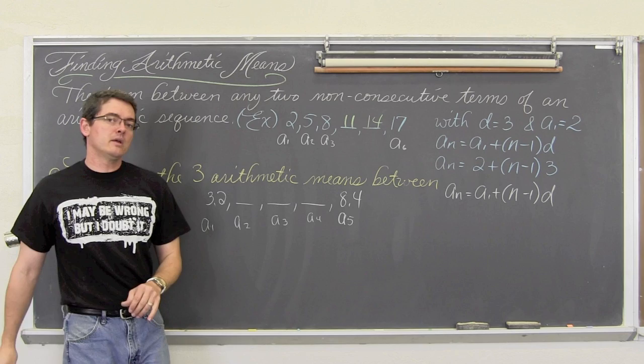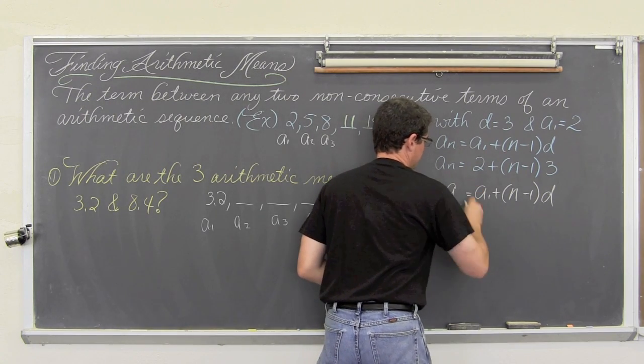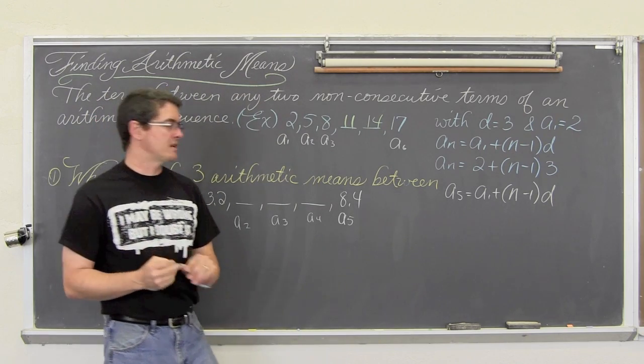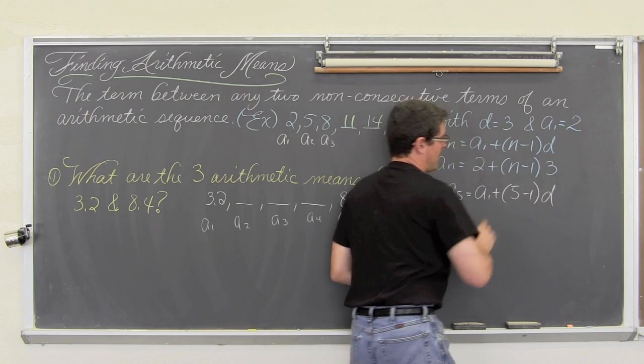Well, our last known value is a sub 5. So a sub 5, and that would allow, now if I am going to say a sub 5 instead of a sub n, that means that n is equal to 5.